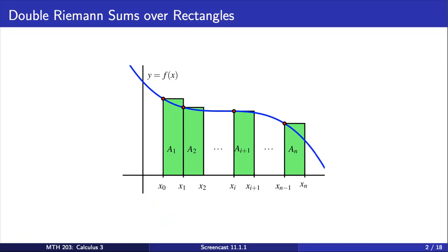In single variable calculus, recall that we approximated the area under the graph of a positive function f on an interval from a to b by adding the areas of rectangles whose heights are determined by the curve. The general process involved subdividing the interval a to b into smaller sub-intervals, constructing rectangles on each of these smaller intervals, then summing the areas of these rectangles to approximate the area under the curve.